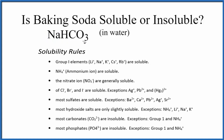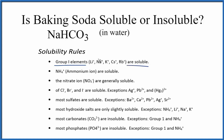So we have our baking soda, and we see the sodium ion here. We have what's called the hydrogen carbonate ion here. If we look at the rules for solubility, group 1 elements — those are elements in group 1 on the periodic table — are soluble.